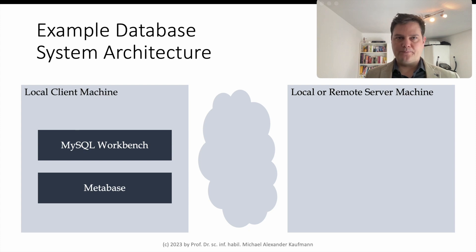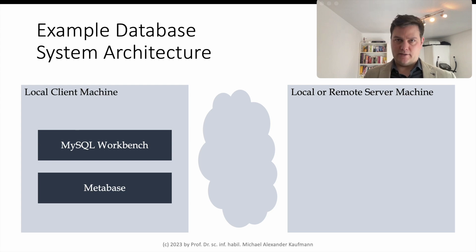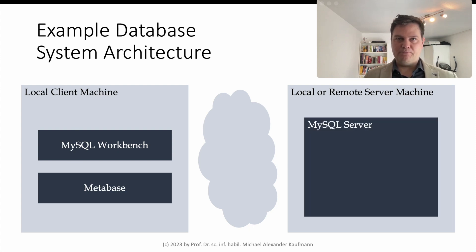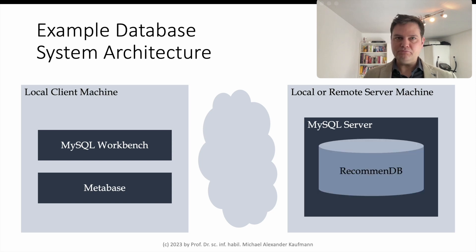The database server is on the right side. For development purposes, this can be the same local computer as the client — the so-called local host. At a later stage, when we want to move an app into a production environment, the server can be a remote server with a corresponding IP address. Onto the server we install the database software MySQL Server, a database management system that will store and organize the database containing the movie and review data along with the analysis results. A MySQL Server can manage several databases — in this example, we name our database RecommendDB for Recommendation Database.